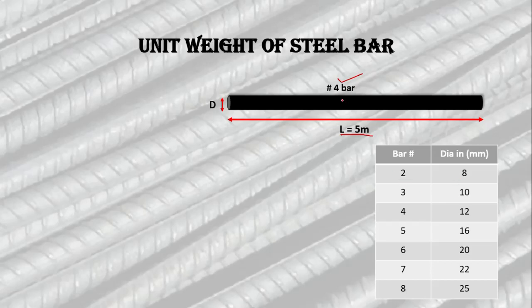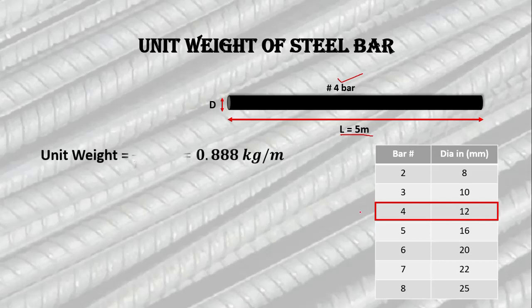Here you can see we have a number four bar, so the diameter is 12 mm. Using the formula d² / 162.162, the unit weight of the number four steel bar will be 0.888 kilograms per meter.